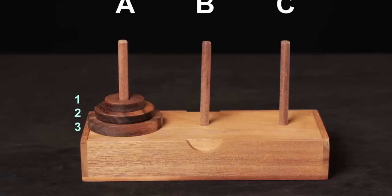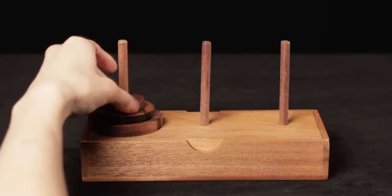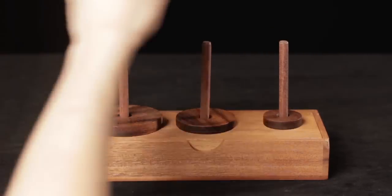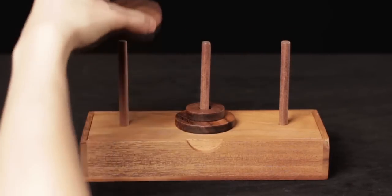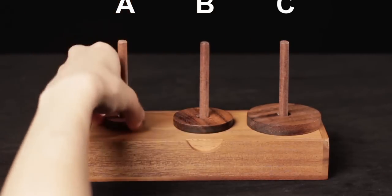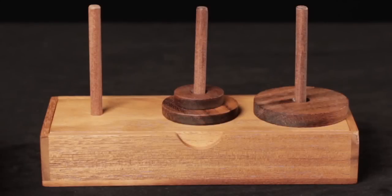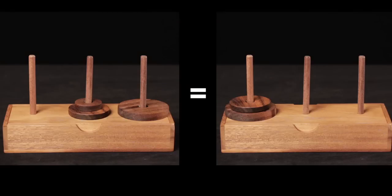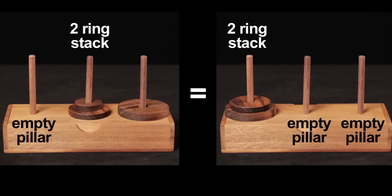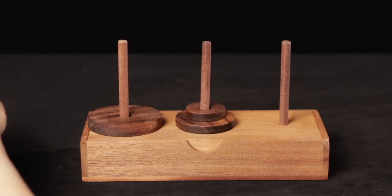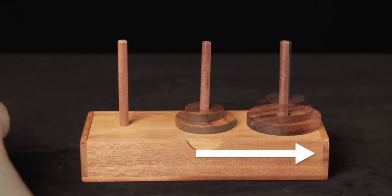Now let's try something a bit harder: transfer a stack of three rings. Ring 1 moves to C, ring 2 goes to B, and ring 1 goes to B. Now ring 3, which was on the bottom, is free to move to C. Then ring 1 goes to A, ring 2 goes to C, then ring 1 finally goes to C. Notice that after we move the bottom ring to C, we essentially arrived at the same conformation as when trying to transfer two rings — we have two stacked rings and an extra empty pillar. Because the largest ring is in the desired final position and does not impede the movements of any of the remaining smaller rings, we can treat the pillar as being empty. This observation is crucial to the recursive implementation: we transferred n-1 rings to the extra pillar, moved the largest ring to the final position, then transferred n-1 rings to the final position.